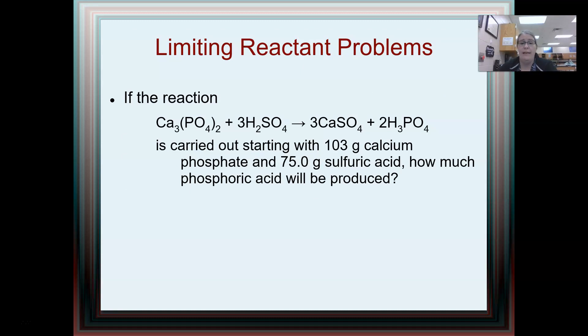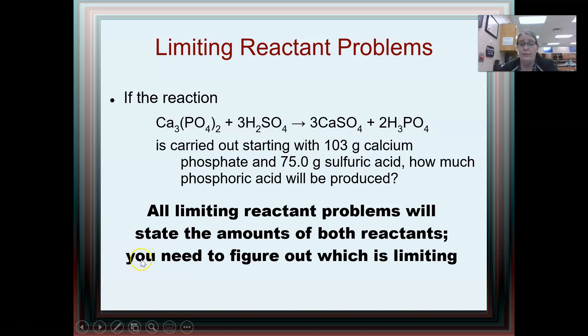On the other side, I have limiting reactant problems. And so I have this precipitation reaction here where I'm going to make some mostly insoluble calcium sulfate. And I noticed something about this problem. As I'm reading along, I noticed that it gives me 103 grams of calcium phosphate and it gives me information about the sulfuric acid. So all limiting reactant problems are going to tell you about both reactants, or all three reactants, or however many reactants. You're going to get information about more than one. And you will have to figure out what is limiting. This is where we did RECA tables in first year chem.